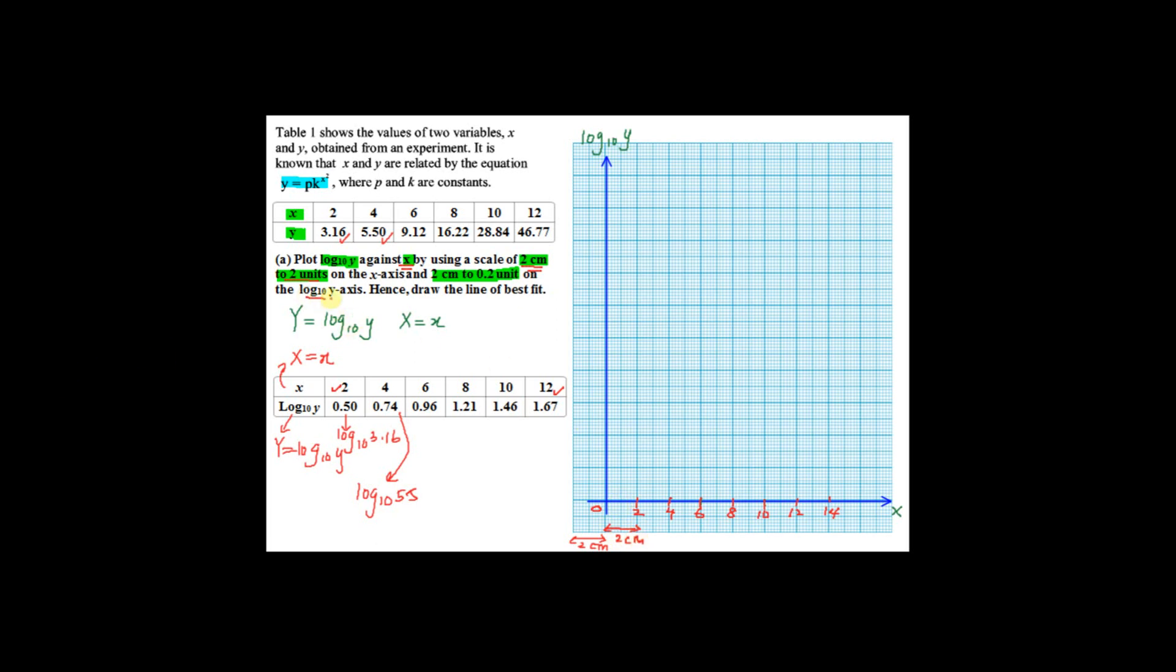Now I move to the vertical axis, which is log base 10 y. You have to use the scale 2 cm to 0.2 units. Now look at your log 10 y here. You have to draw the value from 0.5 to 1.67. And 2 cm here, the units will be 0.2 units.